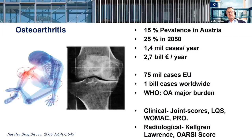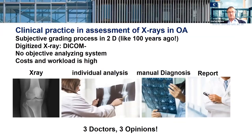We rate osteoarthritis by clinical scores and also by radiological scores, especially one of those is the Kellgren-Lawrence score. The assessment of an X-ray is still a very manual thing. Radiologists kind of look at the screen and describe the osteoarthritis very individually and subjectively, so you get many opinions on one report with respect to subjective analysis.